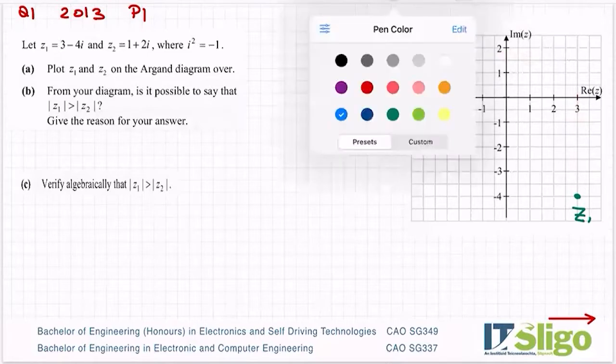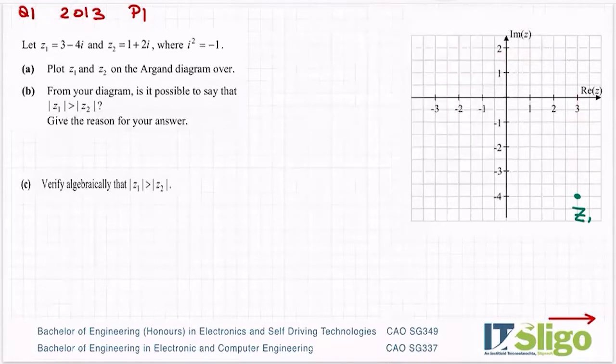And the other one, z2 is 1 plus 2i, so it'll be up to there. 1 on my real, 2 on my imaginary. So let's plot him and he's my z2.